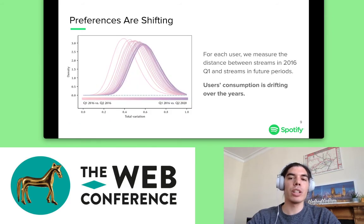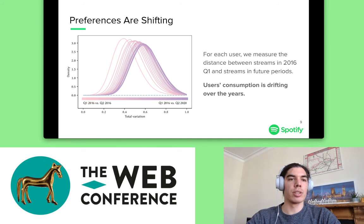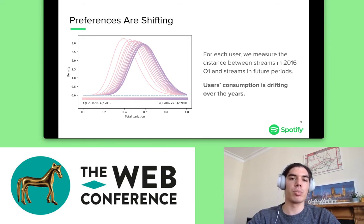You might ask yourself: is it really true that user consumption shifts over the years? With this picture, I try to demonstrate that this is the case. For each user, we measure the total variation distance between the streams in Q1 2016 and future periods, and plot the histogram for all future periods. The total variation is the statistical measure of difference between two probability distributions — if it is 0, the distributions are identical; if it is 1, they are completely different. Clearly, the variation on average increases over the years, showing that users' consumptions in Q2 2020 have evolved a lot compared to Q1 2016.